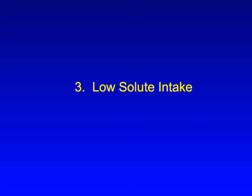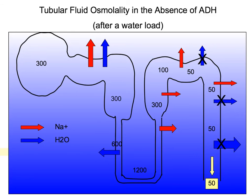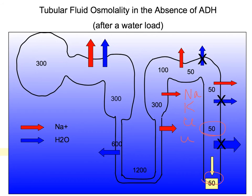Finally, the ability to excrete water may be limited by a low solute intake. Remember that urine osmolality can only go as low as 50 mOsm per liter, with the urinary osmoles consisting mostly of sodium, potassium, chloride, and urea. It's not possible to create a solute-free urine or to excrete pure water.